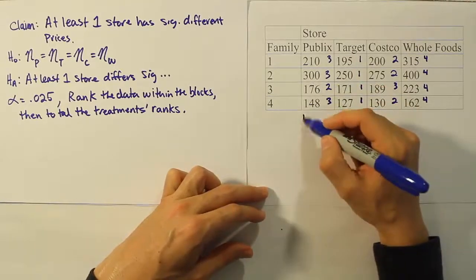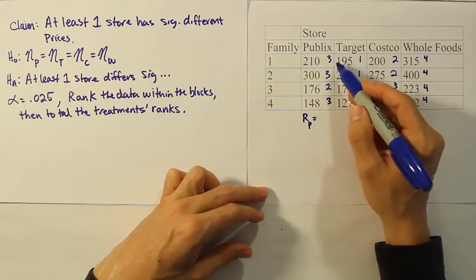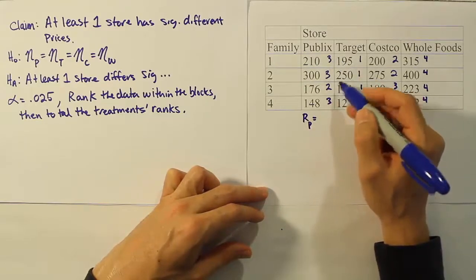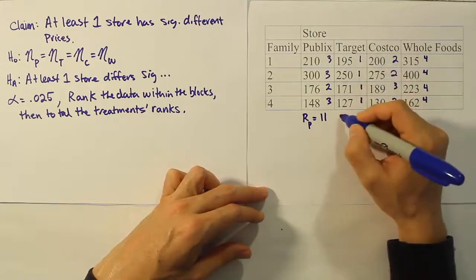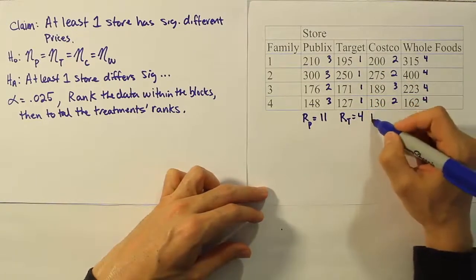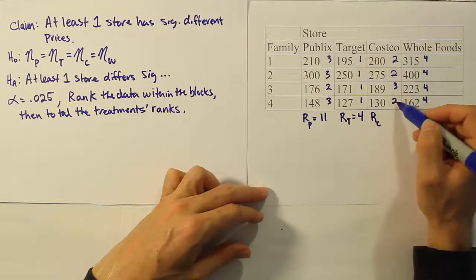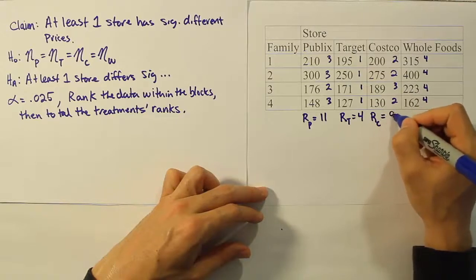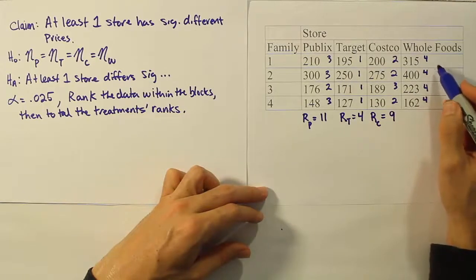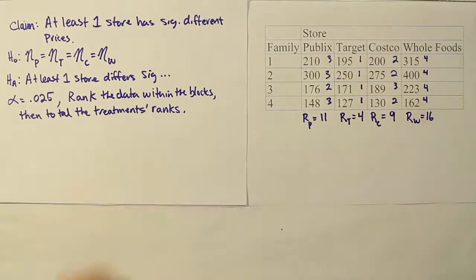Now we're going to get the totals for the different groups. So the rank total for Publix will turn out to be 3, 6, 9, 10, 11. The rank total for Target is only 4. The rank total for Costco is going to be 2, 4, 6, 9. And then we'll have 4, 8, 12, 16 for Whole Foods. So those are the rank totals and that's what we need to come up with our test statistic.